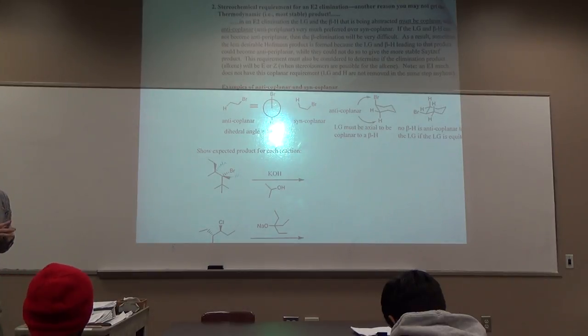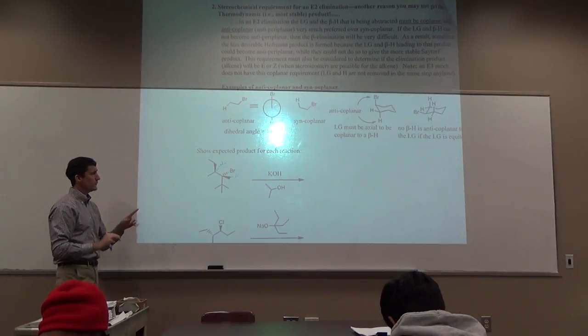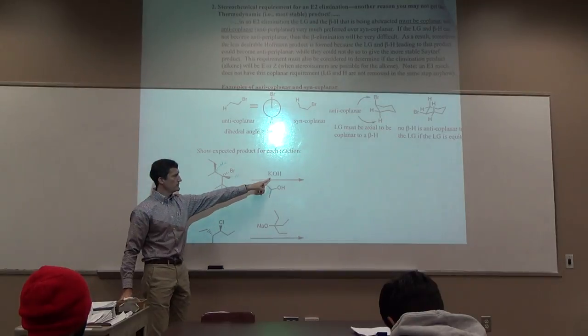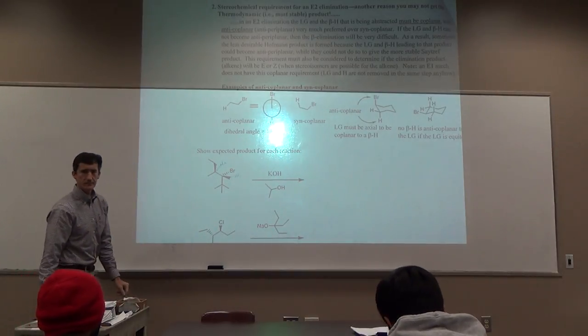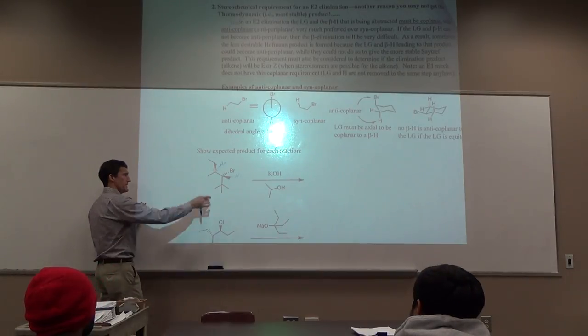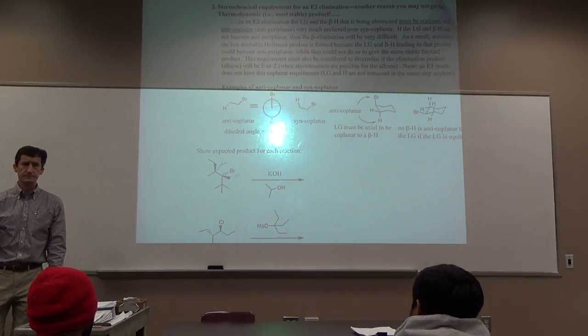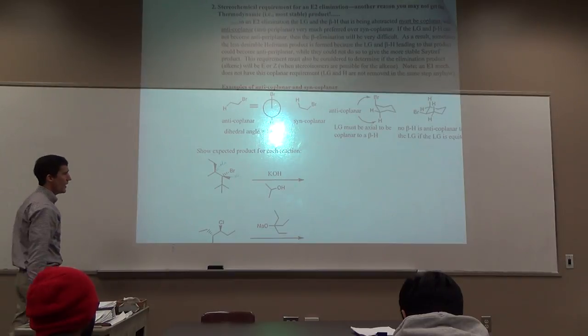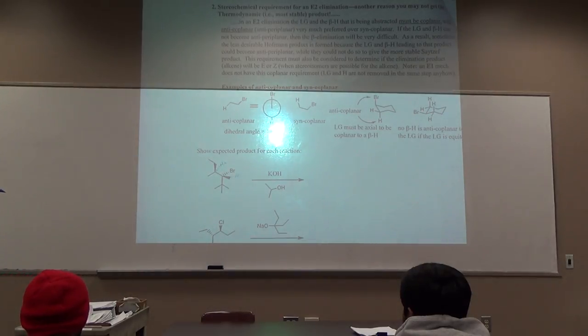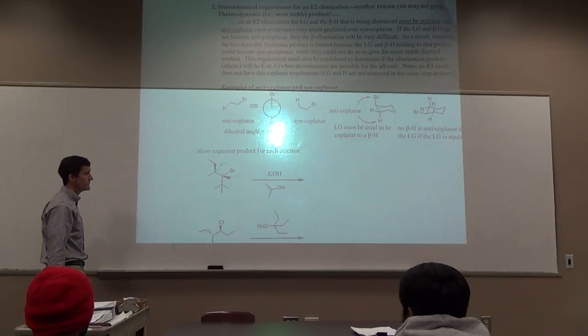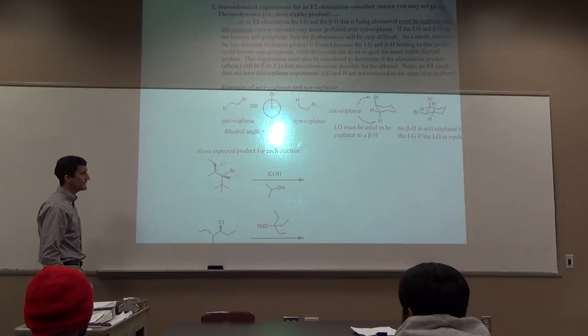Which one is thermodynamically preferred? Removing HA to give the Zaitsev. HA is more sterically hindered though. What type of base are we using? Sterically hindered or not? Not sterically hindered. Hydroxide is one of the smallest bases you can have. It should have no trouble taking HA. The problem is, double bond here, there's two different stereoisomers. Which one are we going to get? Whenever you remove the HA and the bromine, the H and the bromine need to be anti-coplanar, or so-called anti-periplanar. That's going to be highly preferred. The only way a syn-coplanar would take place is if anti-coplanar is not possible for some reason.